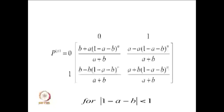This state transition diagram defines the one-step transition probability matrix for a time-homogeneous discrete time Markov chain. Our interest is to find the distribution of xn for general n, which requires the n-step transition probability matrix. Given the one-step matrix P, we can compute P², P³, and so on, and by induction find P^m, then P^(m+n), yielding the n-step transition probabilities such as P(0→1, n) and P(0→0, n).